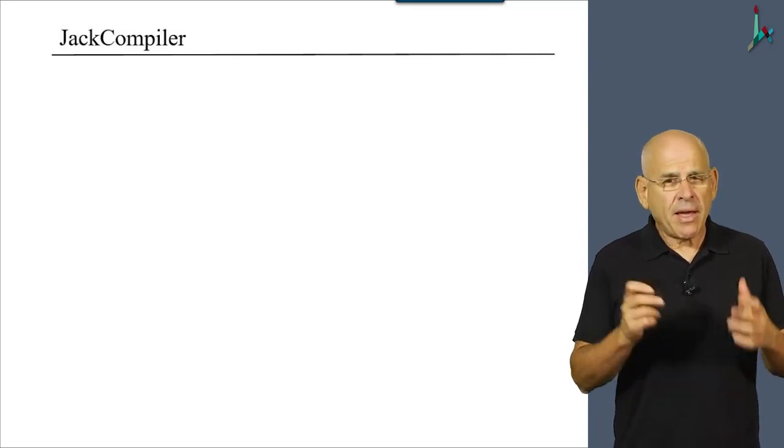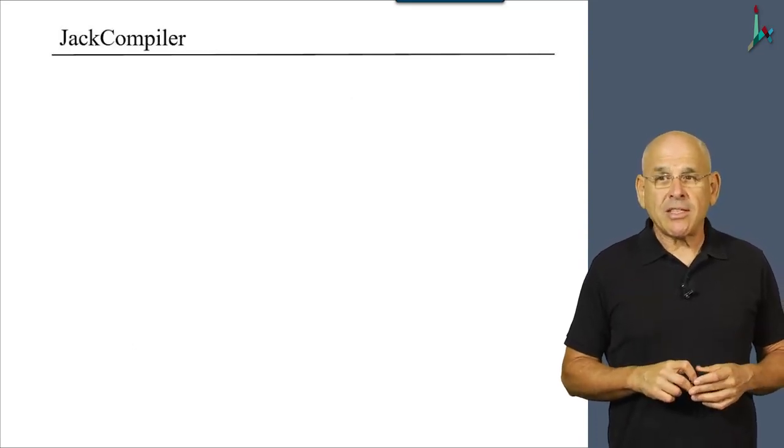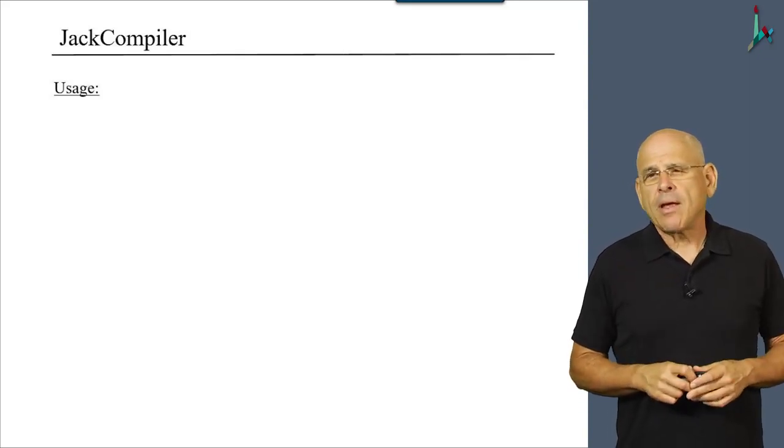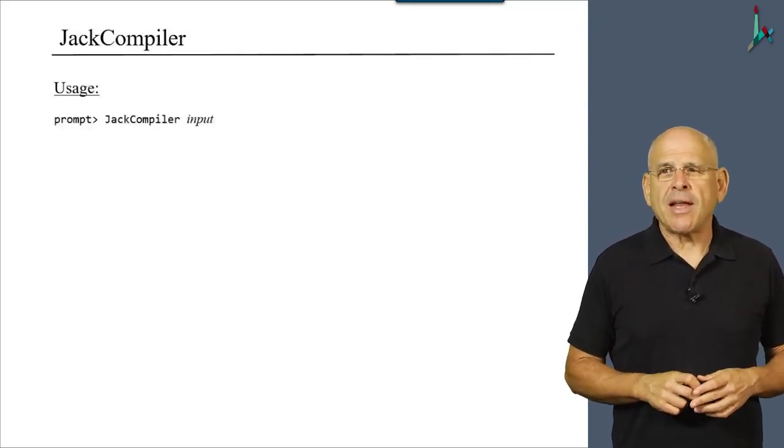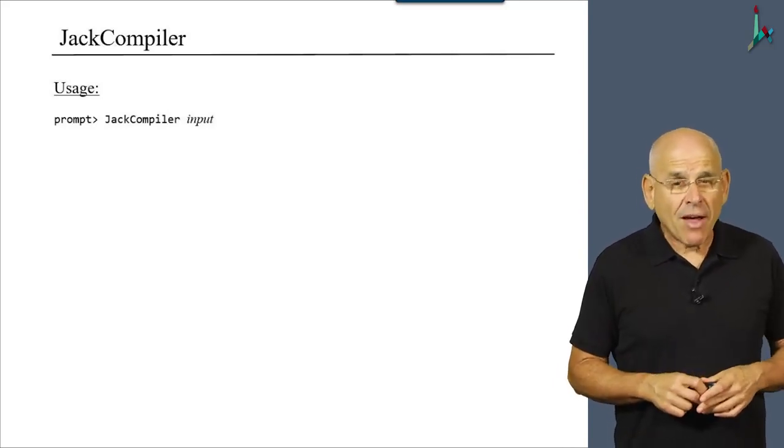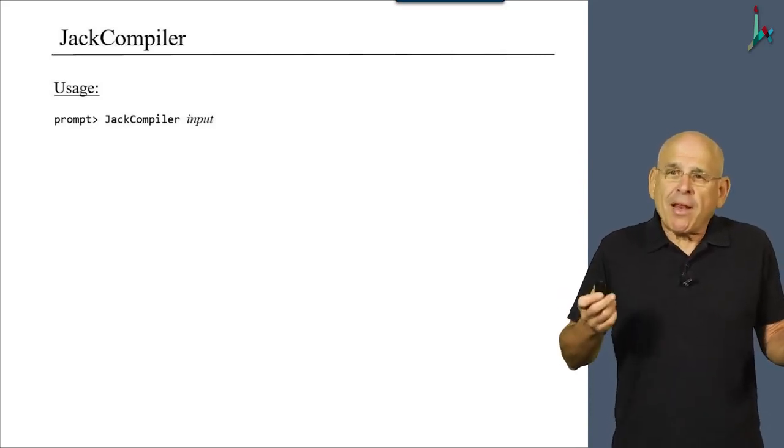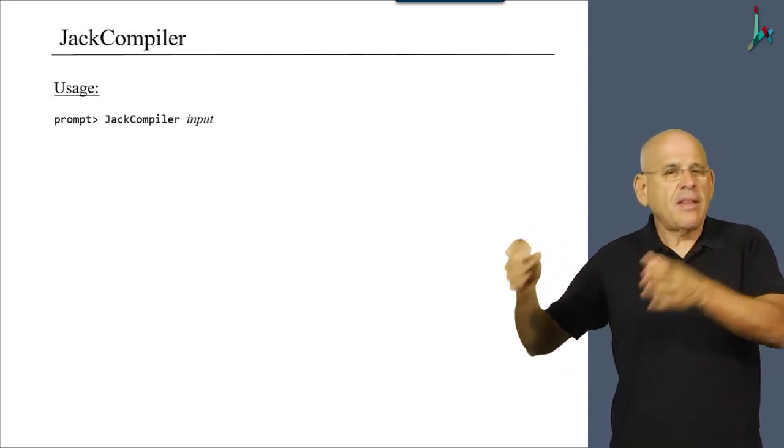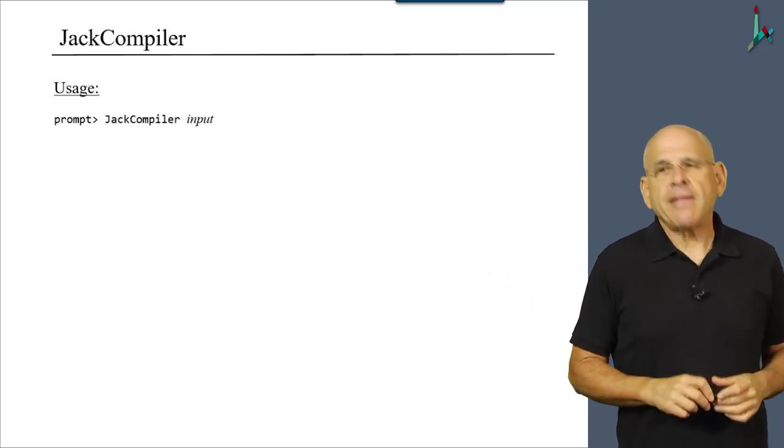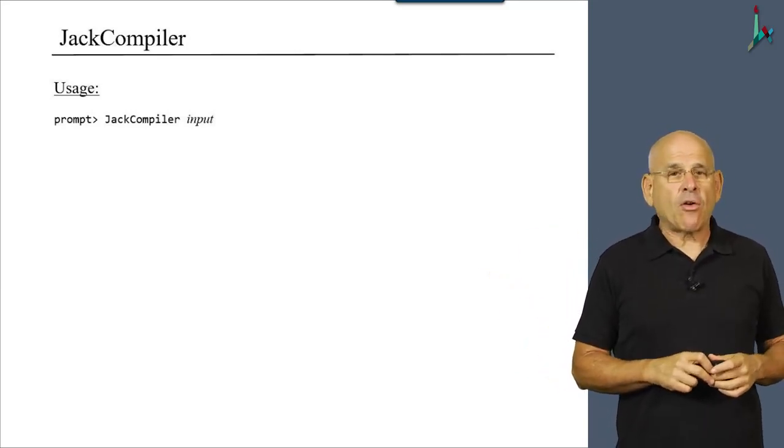All right, so let us begin with the topmost class, the Jack compiler. How do you use it? Let's start with the user level functionality. Well, if you write the Jack compiler in Java, you will probably say something like Java, then the name of your program, JackCompiler. And then you supply it with a mandatory input.